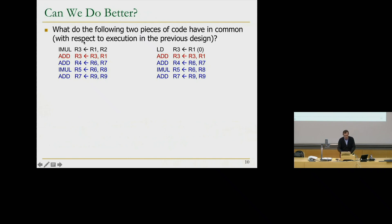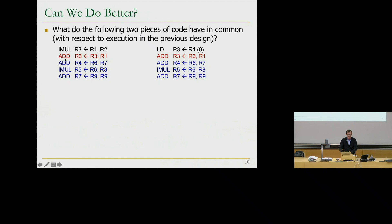The key question is: can we do better? Consider two pieces of a program. An ADD is dependent on a preceding MULTIPLY — the multiply produces R3 and the ADD consumes R3. But younger instructions are completely independent of both. In an in-order pipeline, the ADD waits eight cycles until the multiply produces R3, and those independent instructions also wait even though they didn't have to. Similarly with a load: if the load produces R3, the ADD stalls, and the load can take thousands of cycles.